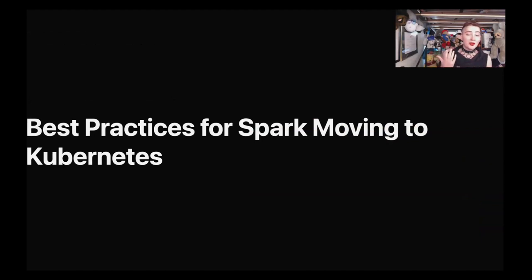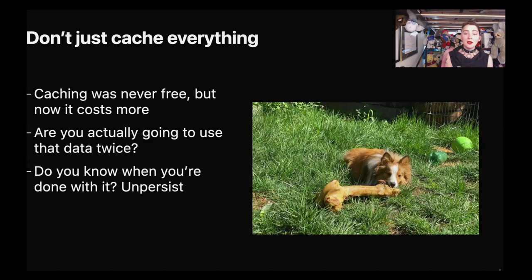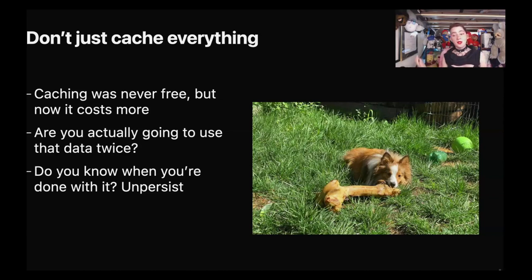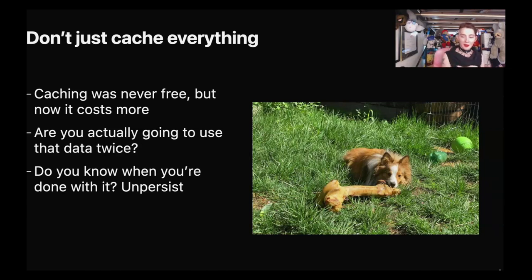So that's about our experiences moving to Kube. What are the best practices we learned? One thing we learned is not to just cache everything. Caching was never free, but now it costs even more — because when we decommission an executor, we now have to migrate the cache data. And now for caching stuff to disk, disk is actually a metered resource. Think about whether you're actually going to use the data twice. If you're done with it, tell Spark you're done with it — especially for users in non-JVM environments, the garbage collector isn't able to handle this as well, so you need to explicitly tell Spark it can get rid of the data.